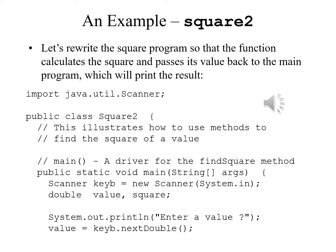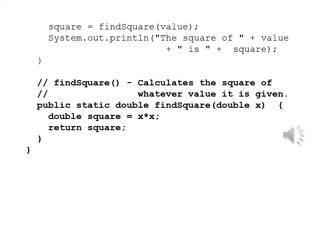We finish the main program by writing square equals findSquare value, and then System.out.println quote the square of unquote plus value plus quote is unquote plus square, close parenthesis semicolon, and a close brace for the method.